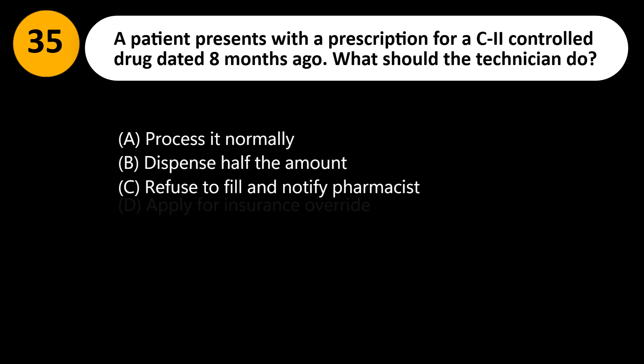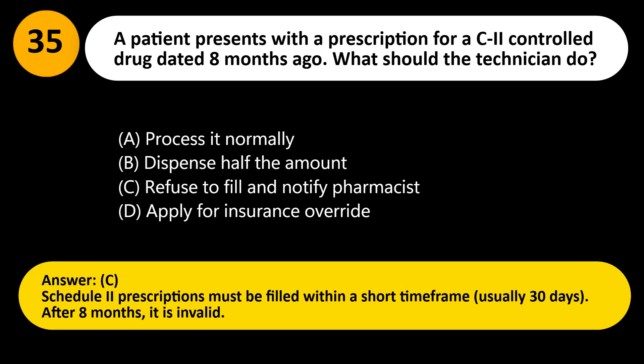A patient presents with a prescription for a Schedule II controlled drug dated 8 months ago. What should the technician do? A. Process it normally. B. Dispense half the amount. C. Refuse to fill and notify pharmacist. D. Apply for insurance override. Answer: C. Schedule II prescriptions must be filled within a short time frame, usually 30 days. After 8 months, it is invalid.